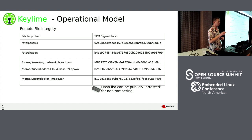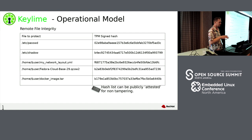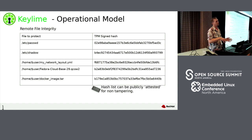You can also secure your running system by providing an approved whitelist of processes. KeyLime will ask the TPM to sign what's running on your system, so you can compare the hashes of running processes to a gold system hash that you created with your offline air-gapped system as a gold image.